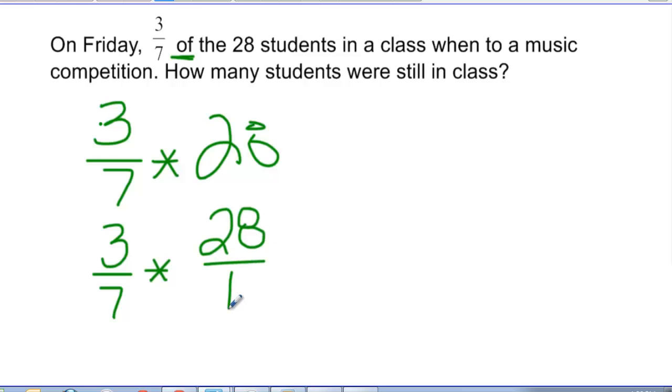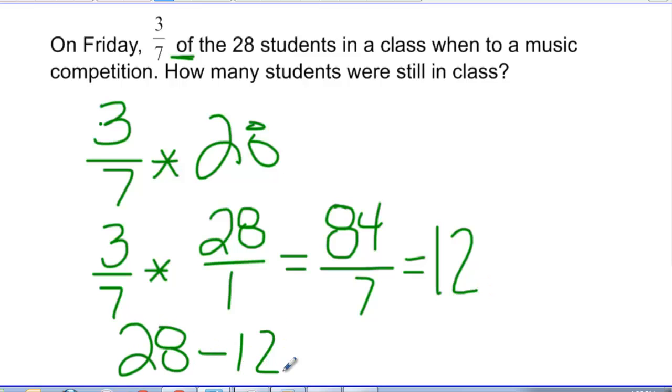And now I'm just going to multiply my numerators together and multiply my denominators together. So 3 times 28 should give me 84, and 7 times 1 gives me 7. And I have to now change this to a mixed number or a whole number if that's what I get. And I believe that 7 divides into 84 exactly 12 times. So if 3 sevenths of my 28 students are gone, then that is going to be 12. The question asks how many students were still in class. So if 12 students are gone, that means I need to now take 28 minus 12, the ones that were gone, to figure out how many were still in the class. And so that tells me that there were 16 students left in the class on that day.